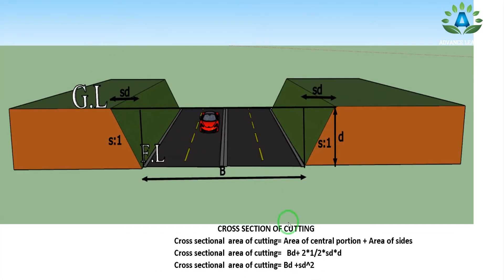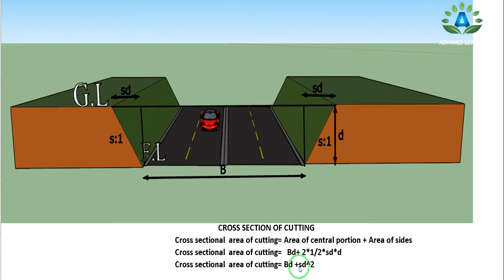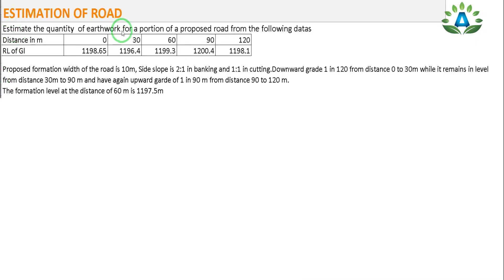This is the cross-section of the cutting. We have the road width B, the depth of cutting D, and the side slope S:1, making the horizontal projection S×D on each side. The total area equals the area of the central rectangle plus the two triangular sides: area of rectangle is B×D, and the two triangles give SD². So the total cross-section area of cut equals BD + SD².